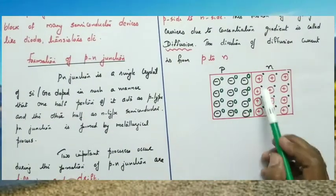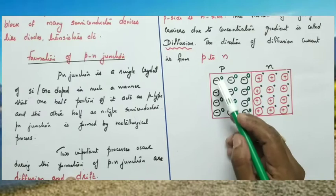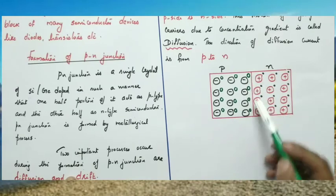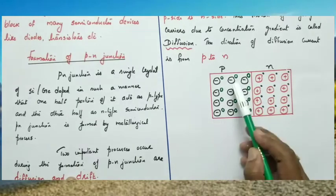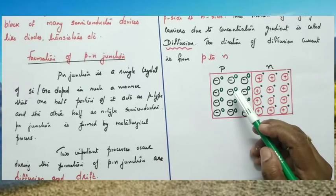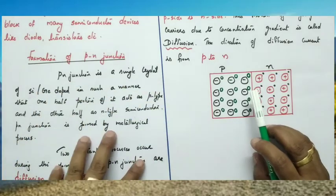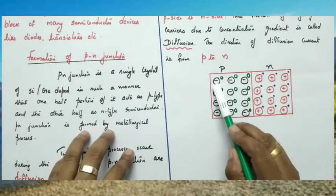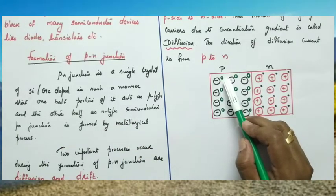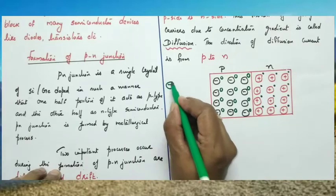This is the P type semiconductor and this represents the N type semiconductor, joined by a metallurgical process. In the P type semiconductor, majority carriers are holes — these circles represent holes. The minus signs represent the acceptor impurity. In a P type semiconductor, the acceptor impurity donates one hole, so the impurity acquires a negative charge.